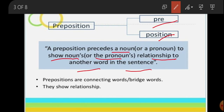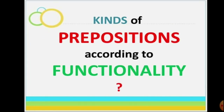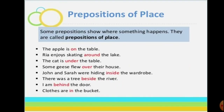Prepositions are connecting words — you can say the bridge words — and they show the relationship of noun and pronoun with the other part of the sentence. So this is the meaning of preposition. Now let's discuss about the kinds of prepositions according to their functionality. First of all, let's learn the preposition of place.